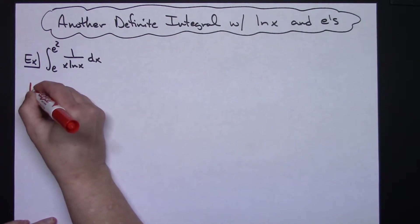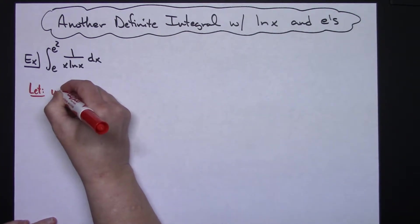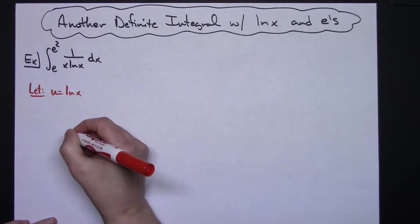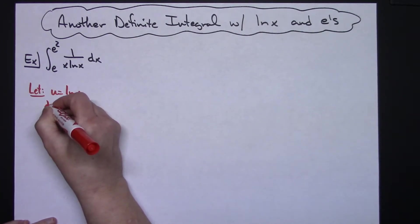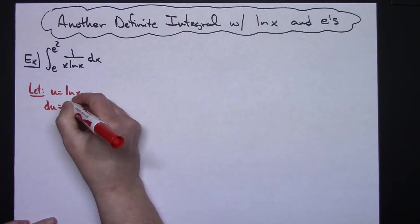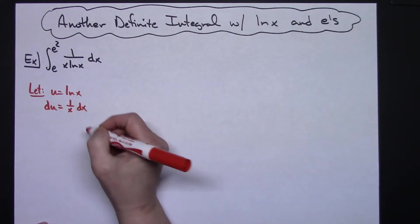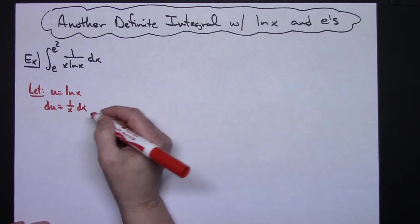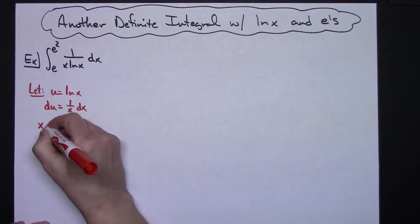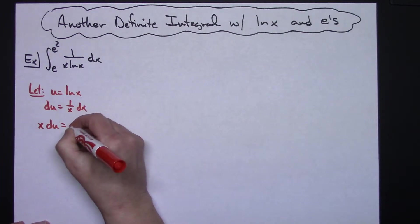I'm going to let u be natural log of x. When I take the derivative of both sides I'll have du equals 1 over x dx, and when I solve for dx I'll multiply both sides by x so I'll have x du equals dx.